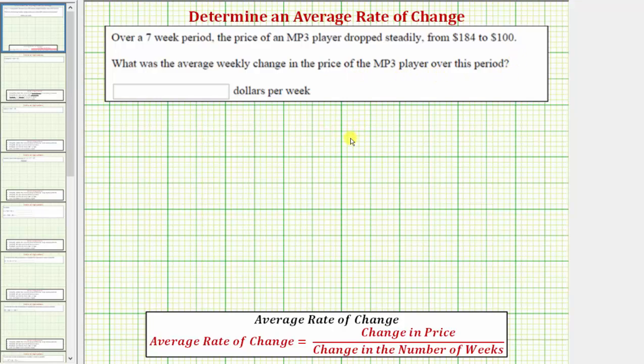So this question is asking us to find an average rate of change, or more specifically, the average weekly change in price, which is equal to the change in price divided by the change in the number of weeks.